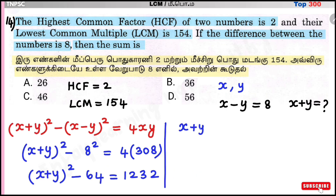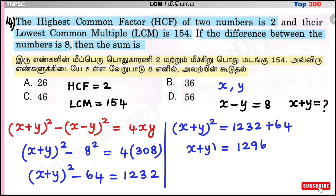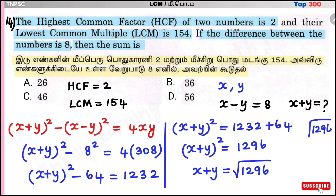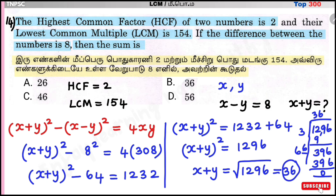Next step: (x+y)² = 1232 + 64 = 1296. Taking the square root of both sides: x+y = √1296. Computing: √1296 = 36. So x+y = 36. Option B: 36 is the correct answer.